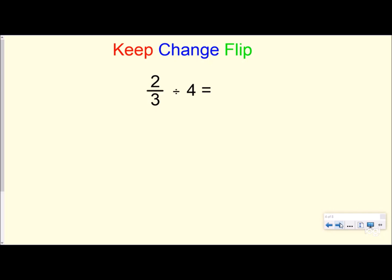So right here I have 2/3 divided by 4. So my dividend is 2/3, and I want to put that into four groups and find out how many are in each group. But instead of drawing an area model, all I'm going to use is my Keep, Change, Flip.